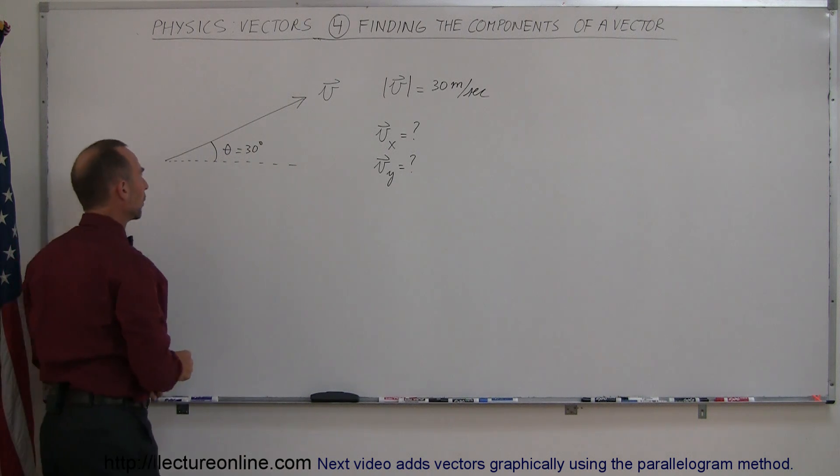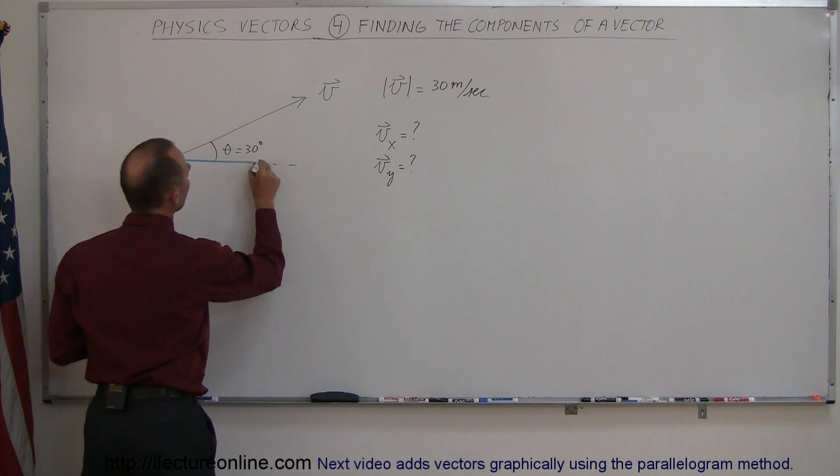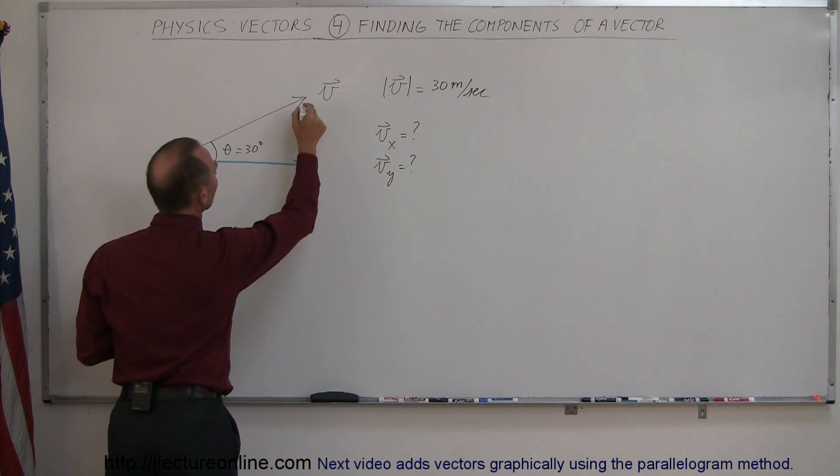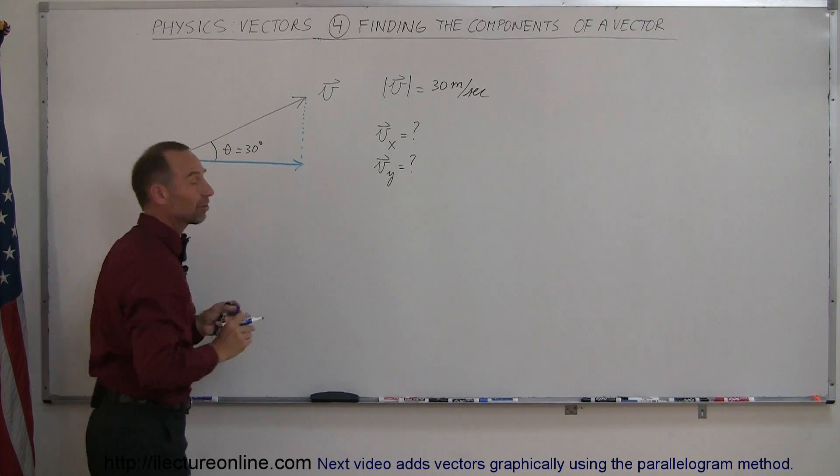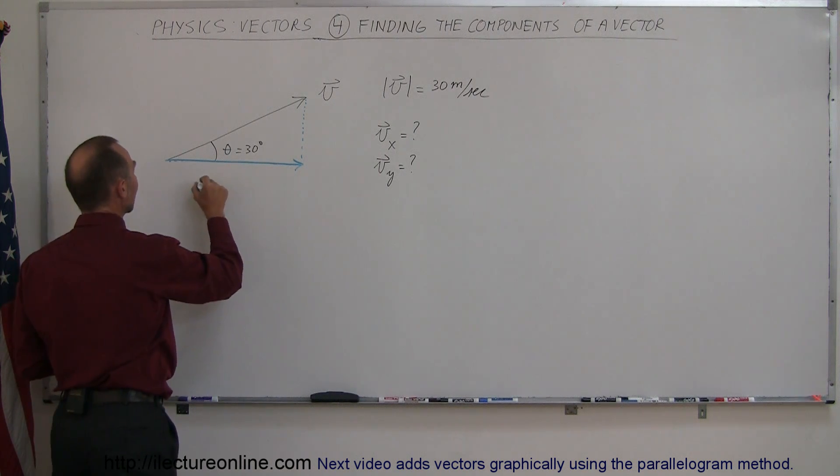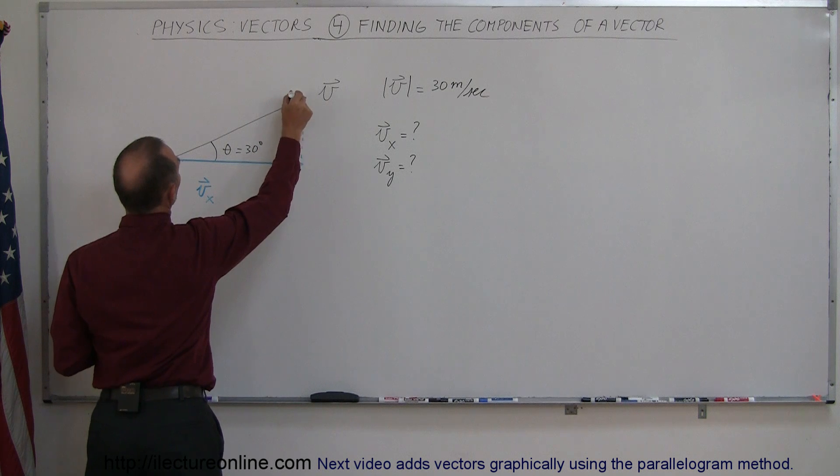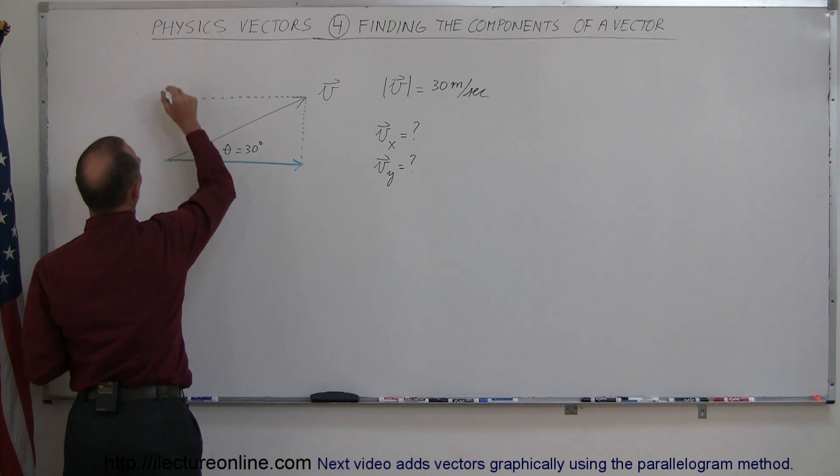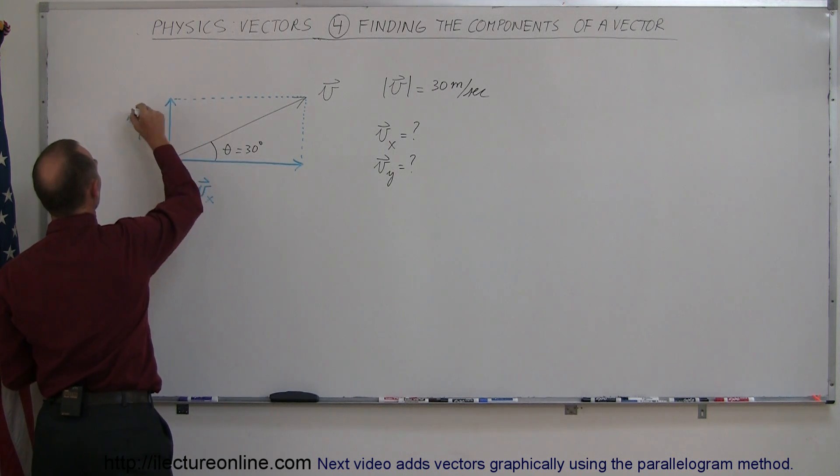So first let me draw what those components would be. Here I can draw this line, this vector right there and notice if I drop this vector down to the horizontal axis, the length here represents the magnitude of the x component in the direction of the x axis. So I can say that this here is v sub x and then if I draw a dashed line, the imaginary y axis here, then this would be, there we go, that would be our y component v sub y.